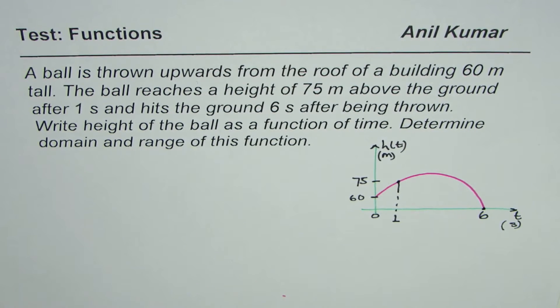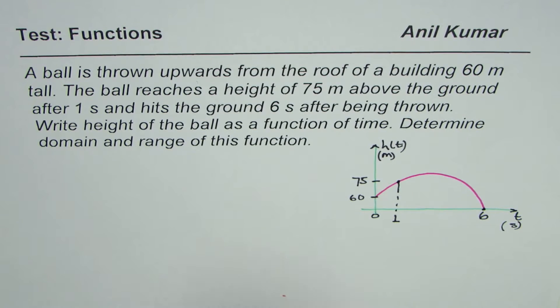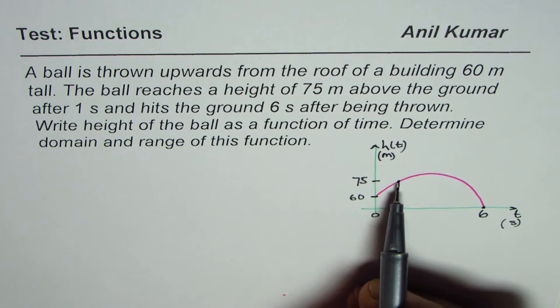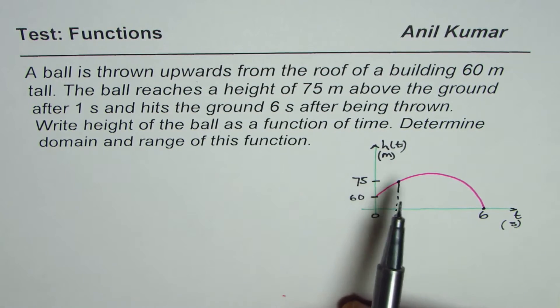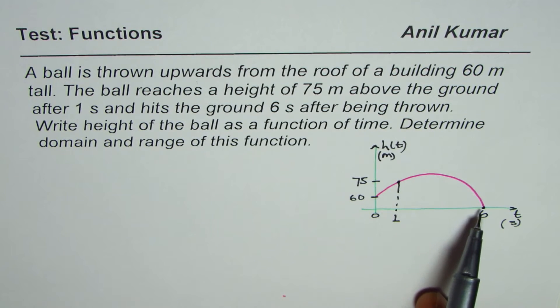It hits the ground six seconds after. After six seconds it hits the ground. So basically on this parabolic path you are given three points. The second point may or may not be the vertex. Assume that it is not. Now based on this you need to find the function to represent this parabolic path.